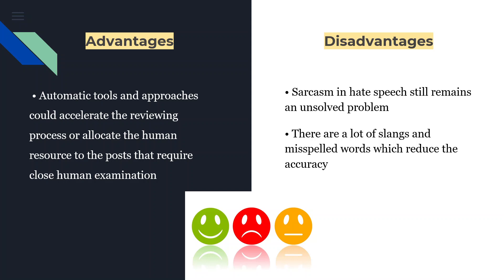Advantages and disadvantages. Automatic tools and approaches could accelerate the reviewing process because it is automated, and they require no human examination. The disadvantages would be that there are a lot of slangs and misspelled words which reduce the accuracy. Sarcasm — when people mean one thing but put it in different forms — still remains an unsolved problem.